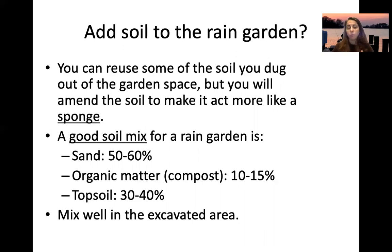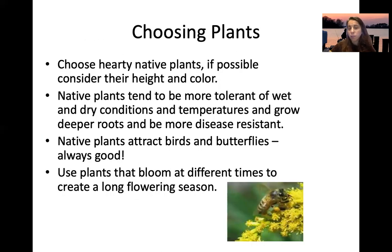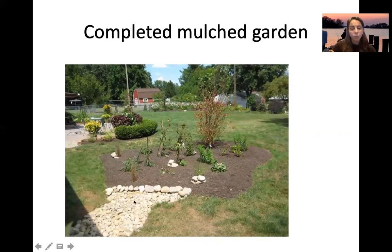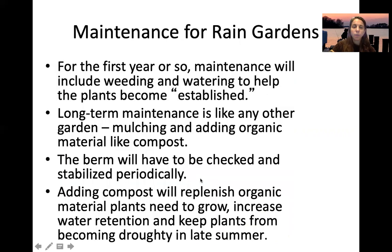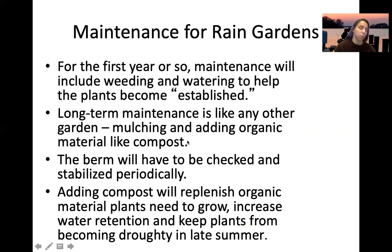Soil amendment can be a mix of sand, organic matter, and topsoil so it's porous. Choose hardy native plants — consider height, color, and bloom time; native plants are more tolerant of wet and dry conditions, grow deeper roots, have more disease resistance, and attract birds and butterflies. For the first year, maintenance includes weeding and watering to establish plants. Long-term maintenance includes adding mulch and compost, and checking and stabilizing the berm.